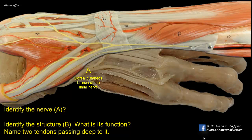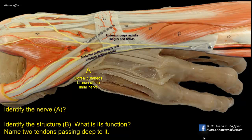The lateral compartment allows the passage of abductor pollicis longus and extensor pollicis brevis. The next compartment allows the tendons of extensor carpi radialis longus and brevis. Next is the groove that lodges the tendon of extensor pollicis longus.